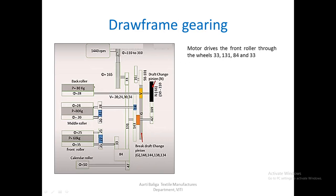The motor drives this particular pulley through 33, then 131, then 84 and 33, which drives the front roller.